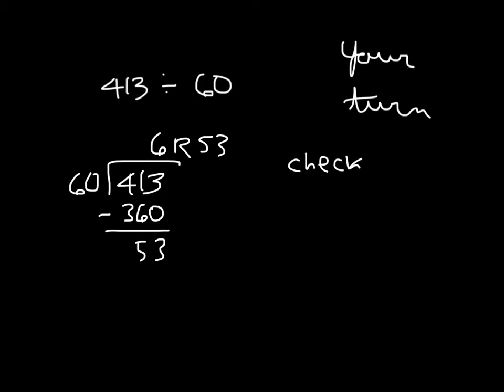For our check, we multiply 6 by that divisor, which was 60, and 6 times 60 is 360. And remember to add back in that remainder of 53. And that does match, so it checks.